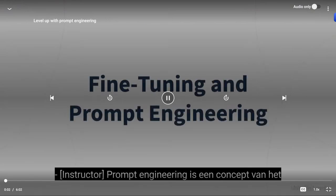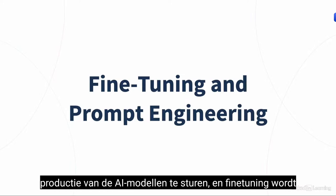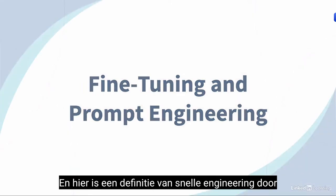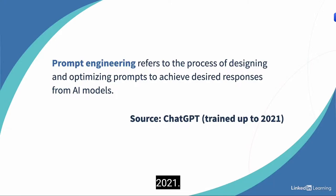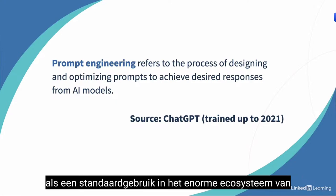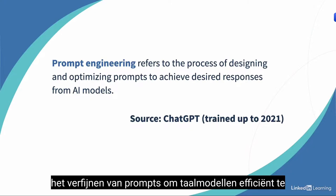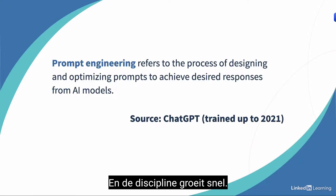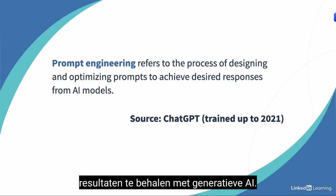Prompt engineering is a concept of creating effective prompts by including questions or instructions in natural language to direct the behavior and output of AI models. Fine-tuning is used to customize the model with its own data on a specific domain. ChatGPT was trained up to the year 2021, so the concept of prompt engineering was not fully established as a standard usage in the generative AI ecosystem at that time. Prompt engineering is a new discipline for fine-tuning prompts to use language models efficiently, and the discipline is growing quickly.